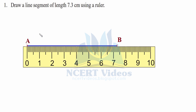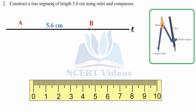Question two: construct a line segment of length 5.6 cm using ruler and compasses. First, draw a line L without measuring it, just by assumption. Then take the compasses — this is the hinge, this is your pencil holder, and this is the needle. Place the needle at the zero of the ruler and open it up to 5.6.